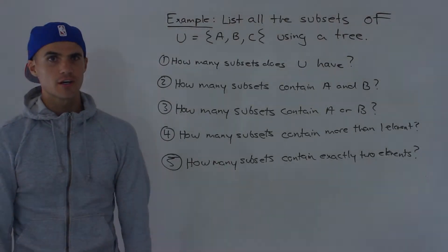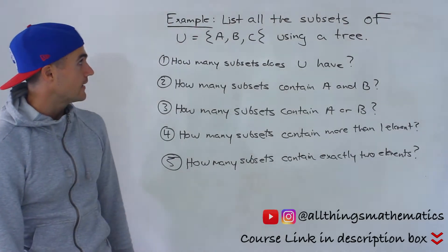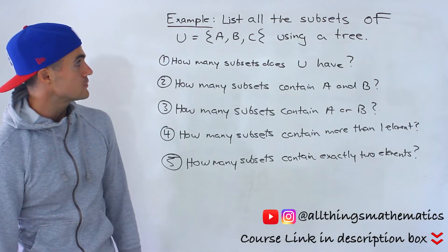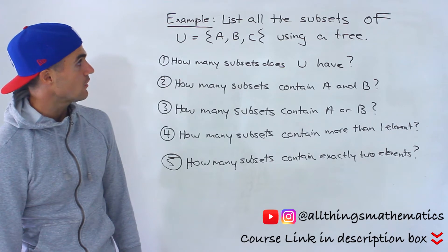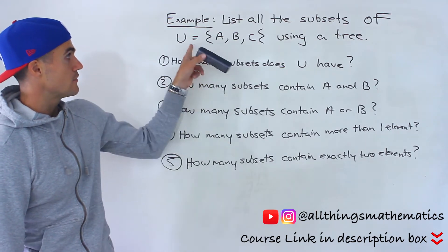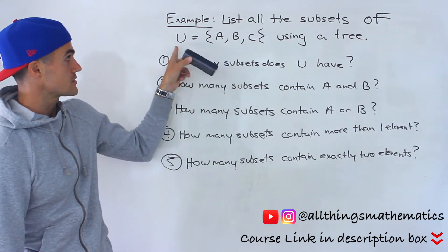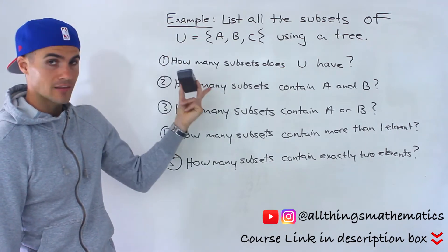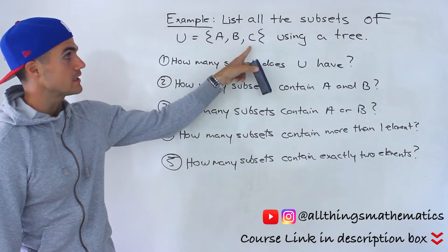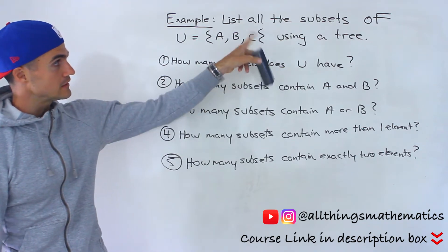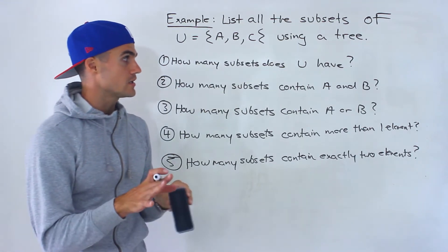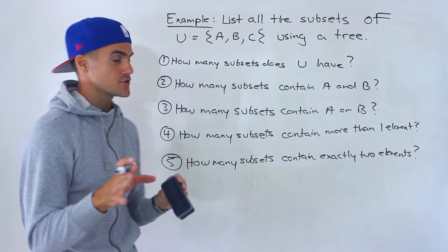What's up everyone? Patrick here. Welcome back. In this next example, what we got to do is list all the subsets of this set. Set U contains the elements A, B, and C. We have to list all the subsets using a tree — that's going to be the first step.